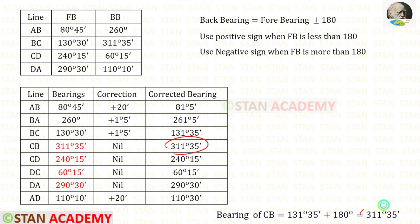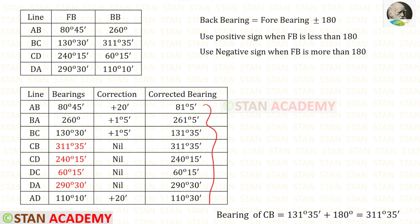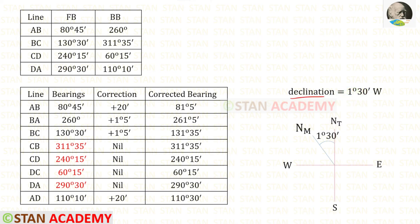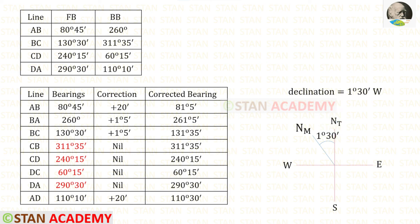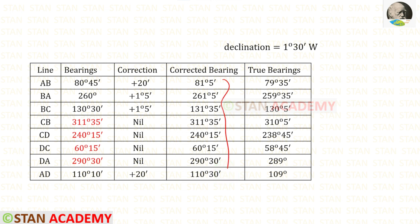Since both of these values are the same, our corrections are correct, and this calculation can be used as a check. We have now found all of the corrected bearings. The declination is given as 1 degree 30 minutes west. To find the true bearings, we need to find the bearings from the true north. Since the declination is west, we subtract 1 degree 30 minutes from all of the corrected bearings to get the true bearings.